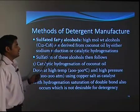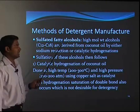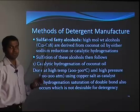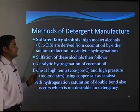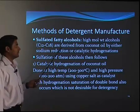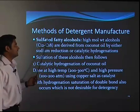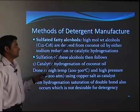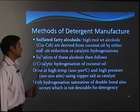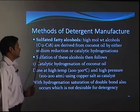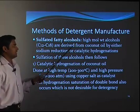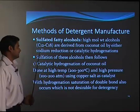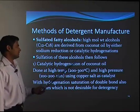Then detergent manufacturing. Earlier, fats and oils were used for soap manufacturing. In detergent manufacturing, we can use fatty alcohols mainly to prepare the detergents. Sulphated fatty alcohols have high molecular weight alcohols mainly varying from C12 to C18. They are derived from coconut oil by either sodium reduction or catalytic hydrogenation, followed by sulphation of these alcohols.